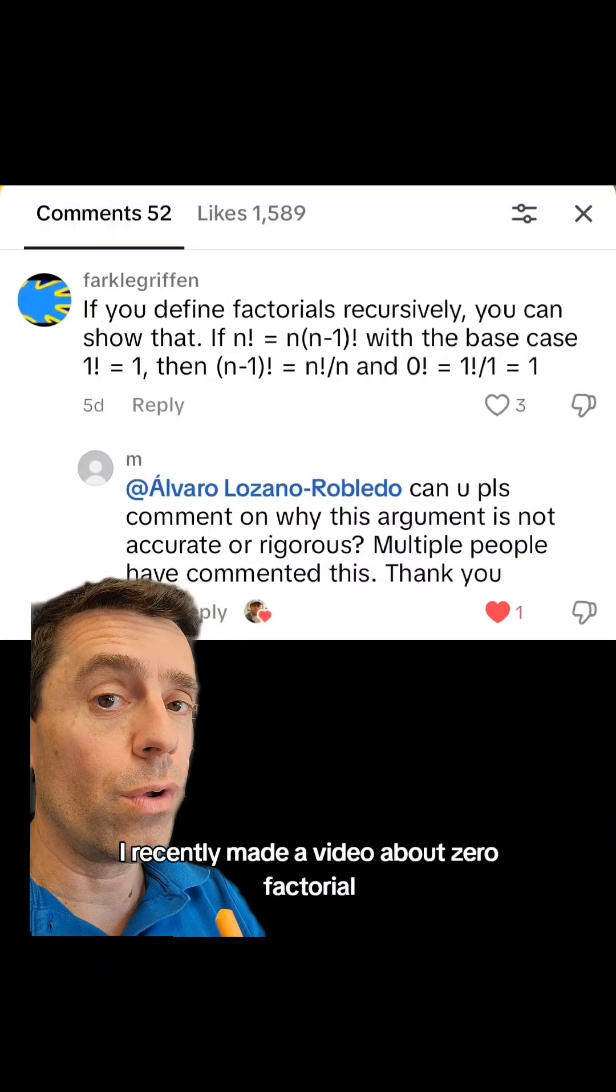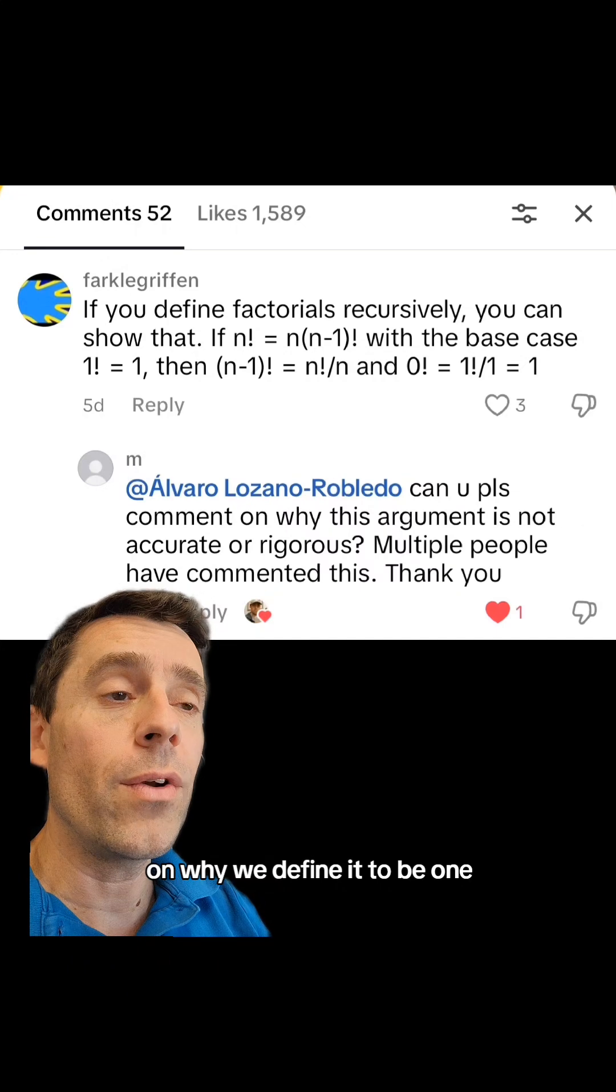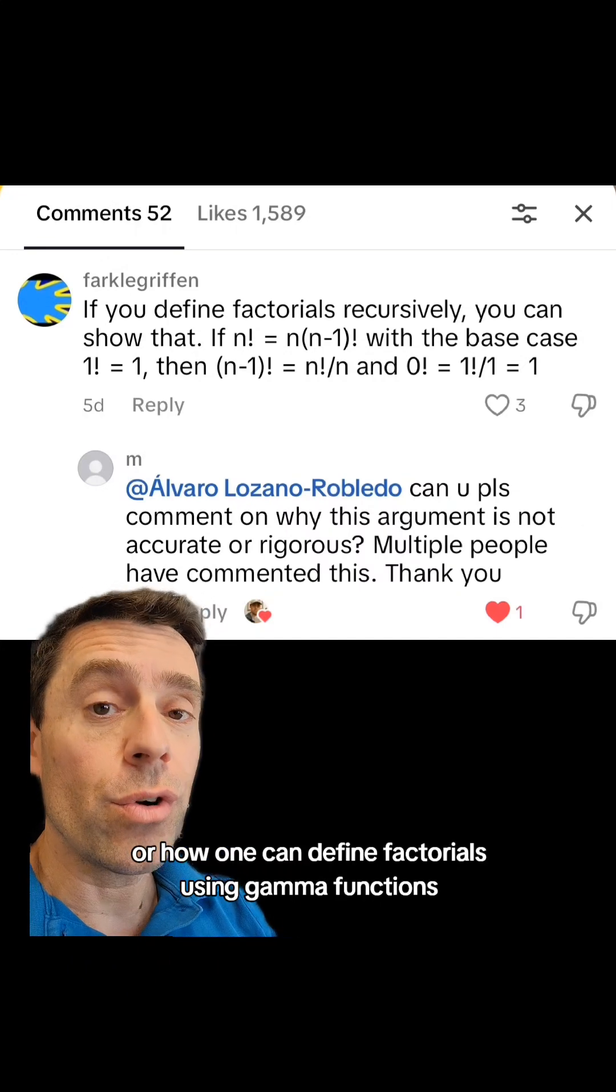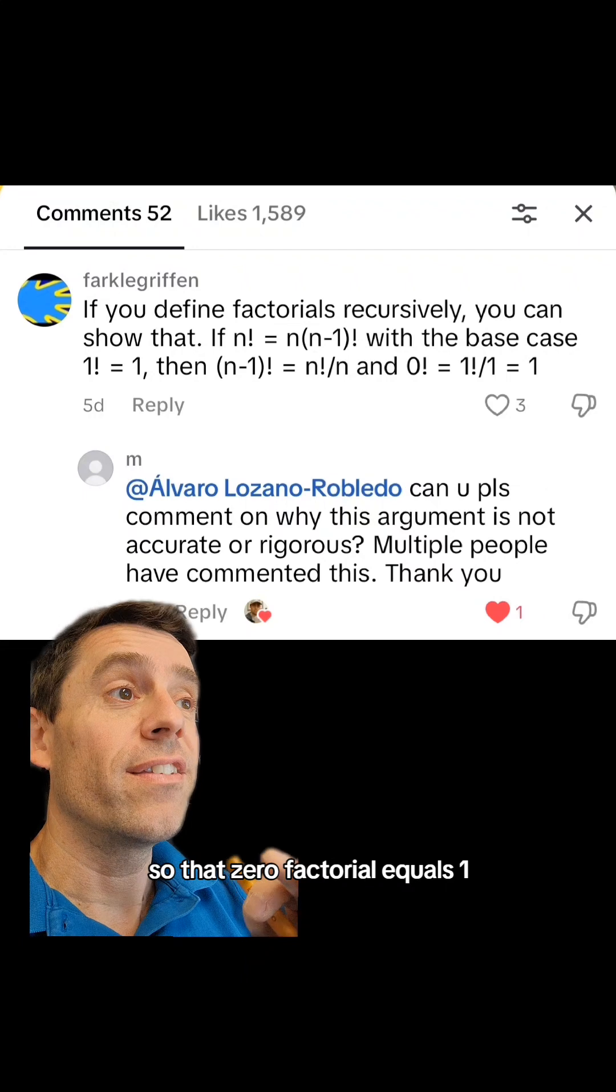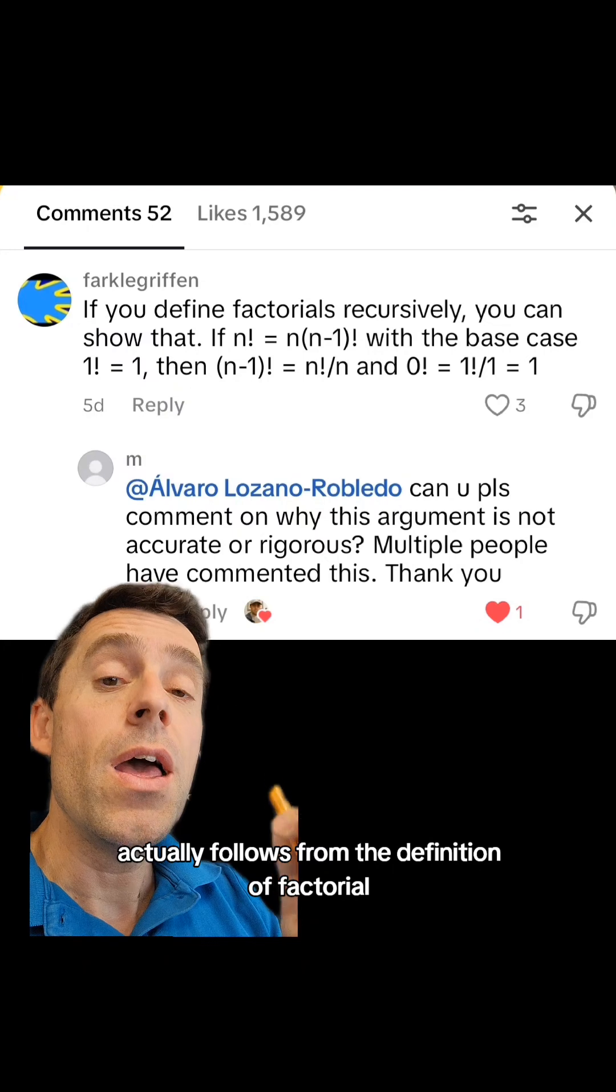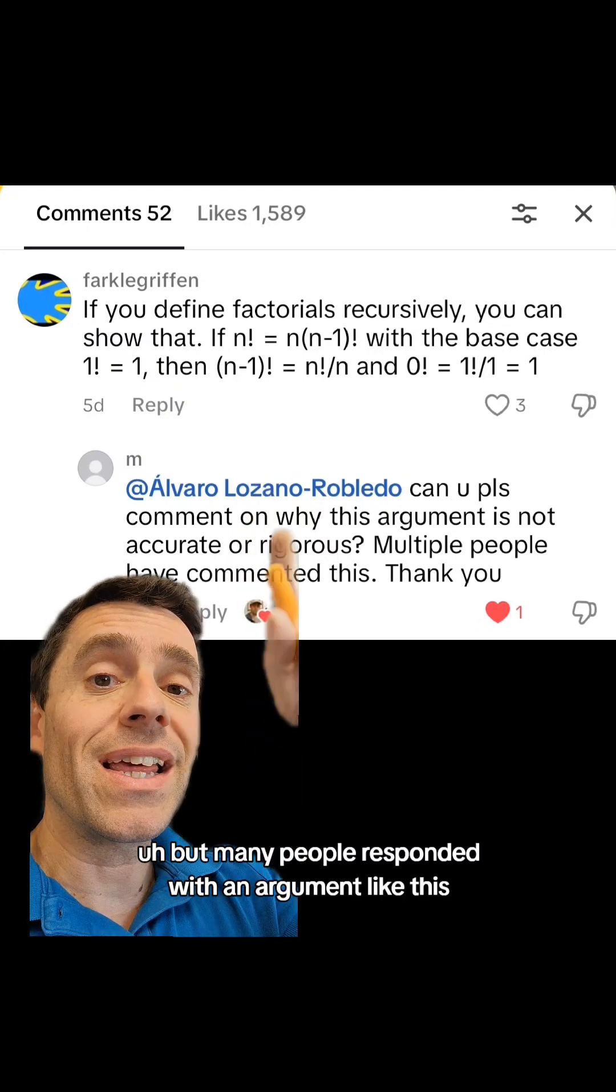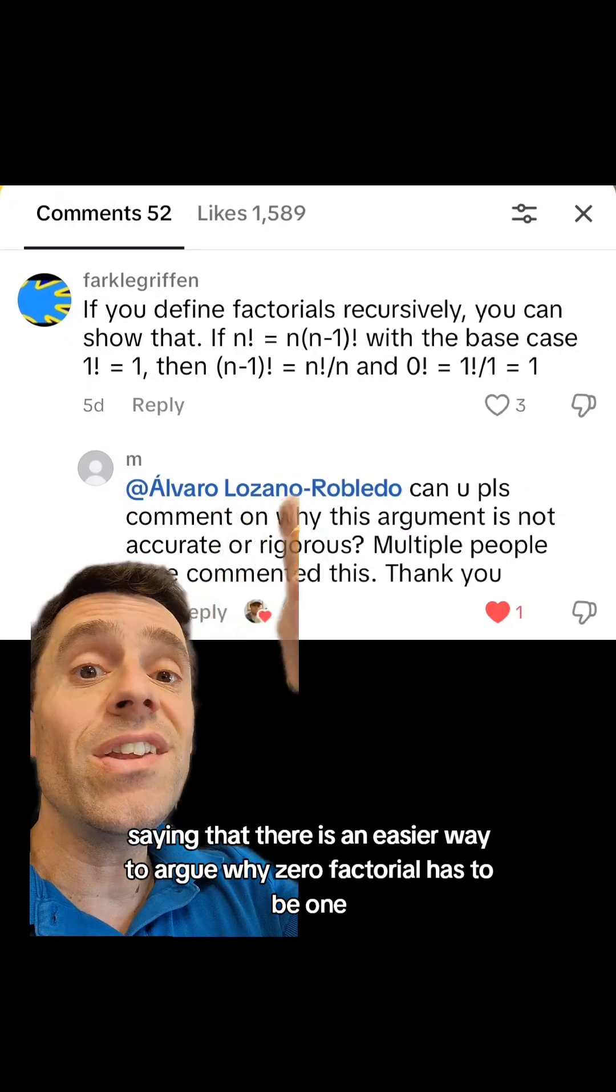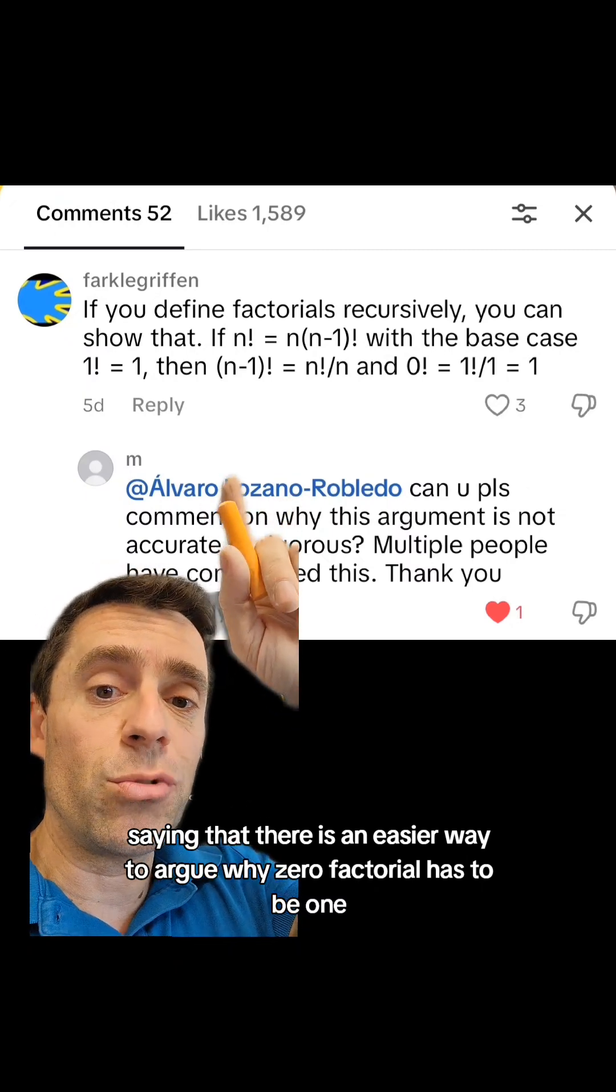I recently made a video about 0 factorial and why we define it to be 1, or how one can define factorials using gamma functions so that 0 factorial equals 1 actually follows from the definition of factorial. But many people responded with an argument saying that there is an easier way to argue why 0 factorial has to be 1.